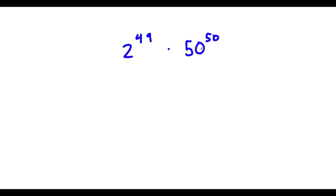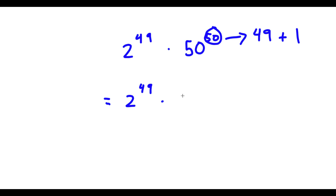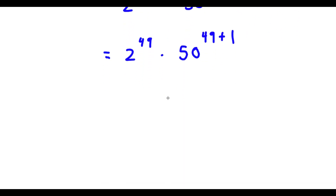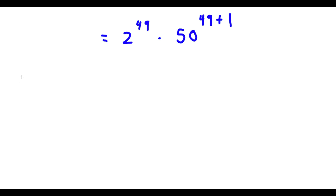Alright, so I have 2 to the power of 49 times 50 to the power of 50. Now the exponent 50 is the same thing as 49 plus 1. So I'm going to rewrite this exponent as 49 plus 1. Using the property that a to the power of m plus n equals a to the power of m times a to the power of n, with a as 50, m as 49, and n as 1.